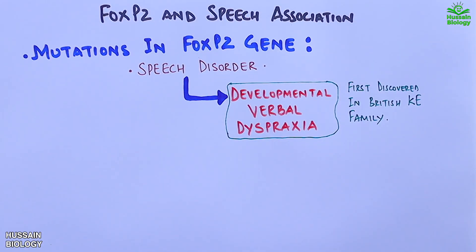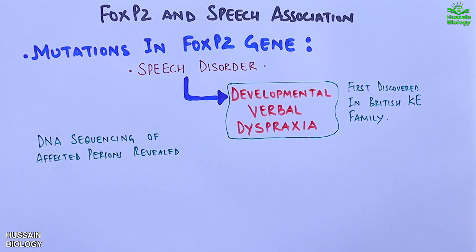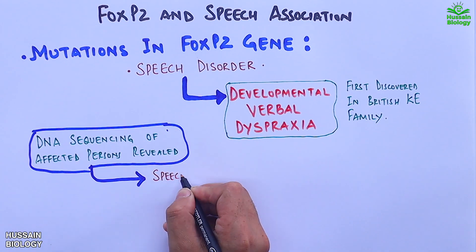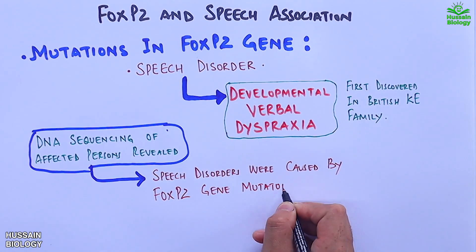In developmental verbal dyspraxia, children have problems speaking — the brain has difficulty planning to move the body parts needed for speech. So motor coordination for speech is disrupted. When the KE family was analyzed by DNA sequencing, affected individuals revealed that speech disorders were caused by a FOXP2 gene mutation.